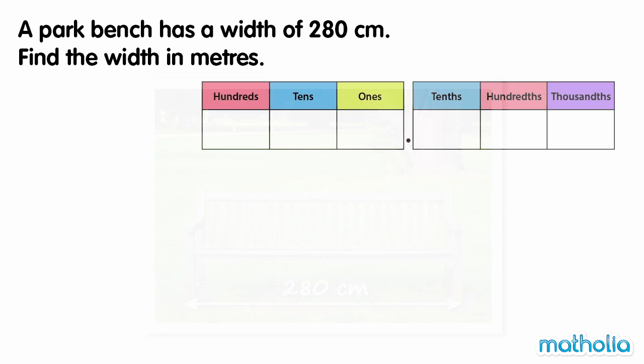Let's write the width in a place value chart. In one metre, there are 100 centimetres.